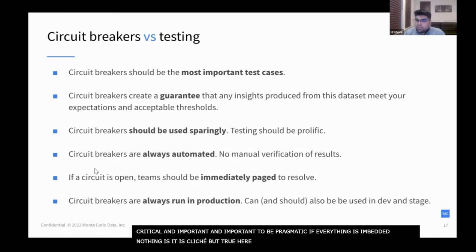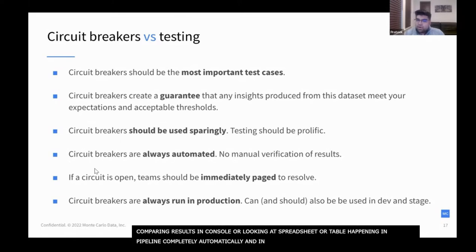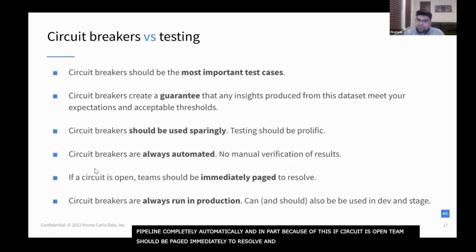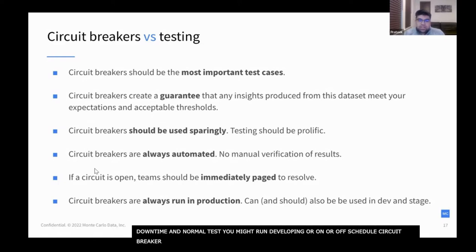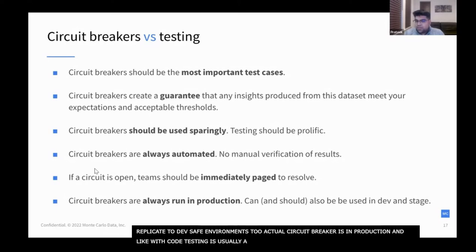Since circuit breakers are embedded in your pipeline, it's very important that they're fully automated. There's no manual verification or review — it's happening in your pipeline completely automatically. Because of this, if a circuit is ever open, teams should be paged immediately to resolve, so your batch can be backfilled. Any open circuit causes downtime. Unlike your normal tests which you might run while developing or on an off schedule, circuit breakers impact your SLA. While tests can be in dev or stage, circuit breakers are always in production — though you can and should replicate them to your dev and staging environments too. And remember: your data changes, and your circuit breaker will always be running against this changing data.